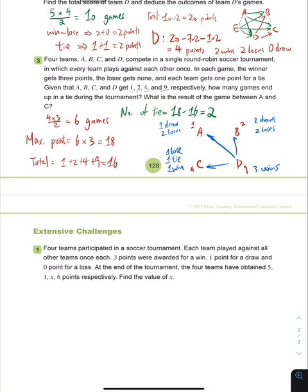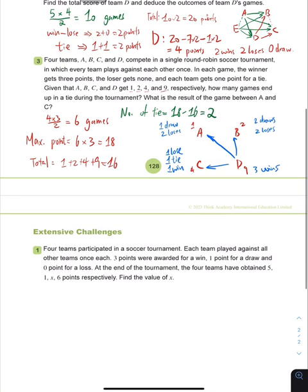Now, if B has two draws, it means that... oh, not two losers, just one loss. Sorry about that.